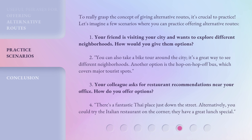To really grasp the concept of giving alternative routes, it's crucial to practice. Let's imagine a few scenarios where you can practice offering alternative routes. Your friend is visiting your city and wants to explore different neighborhoods — how would you give them options? You can also take a bike tour around the city; it's a great way to see different neighborhoods. Another option is the hop-on-hop-off bus, which covers major tourist spots.